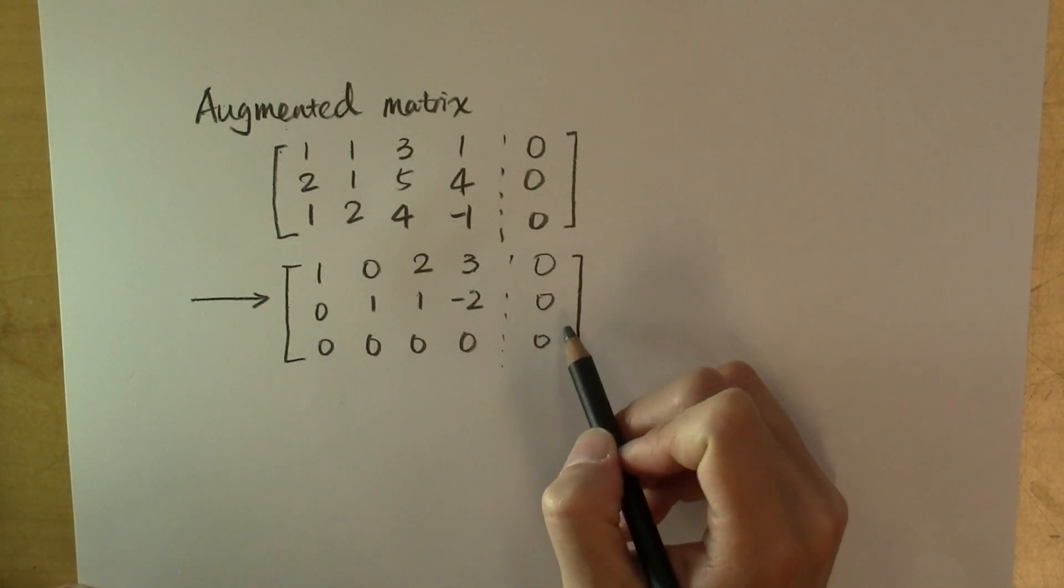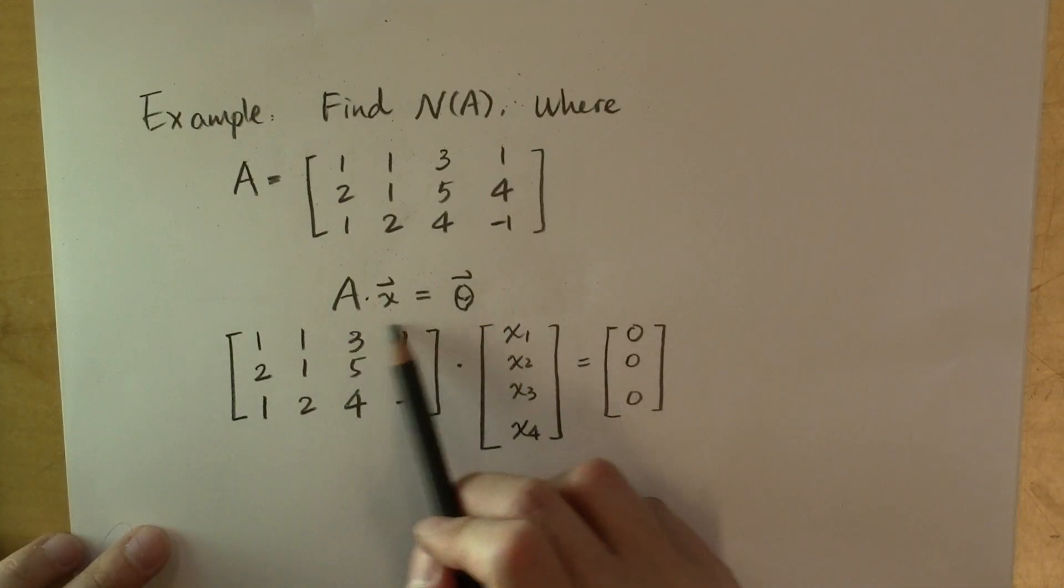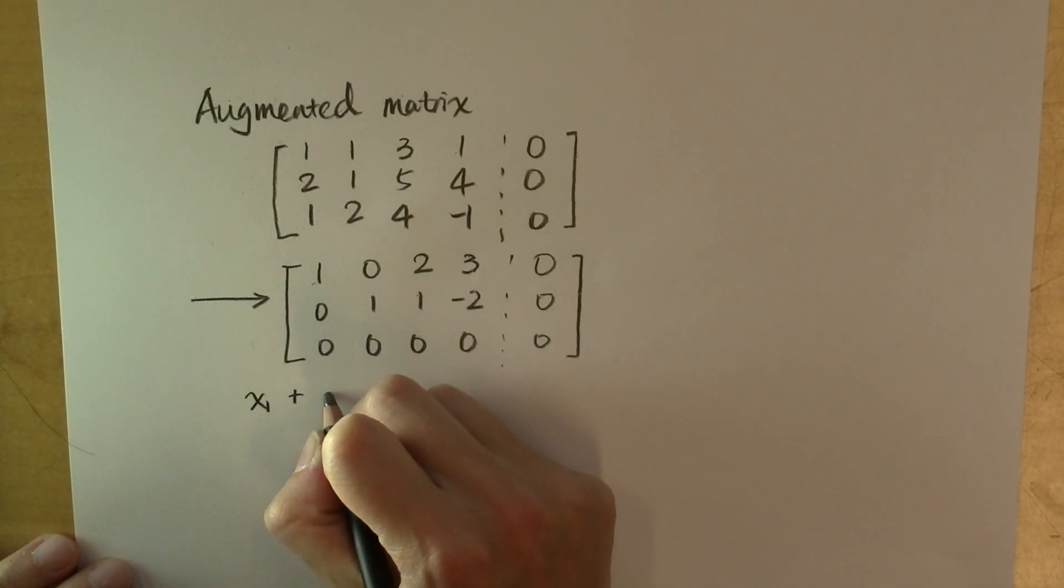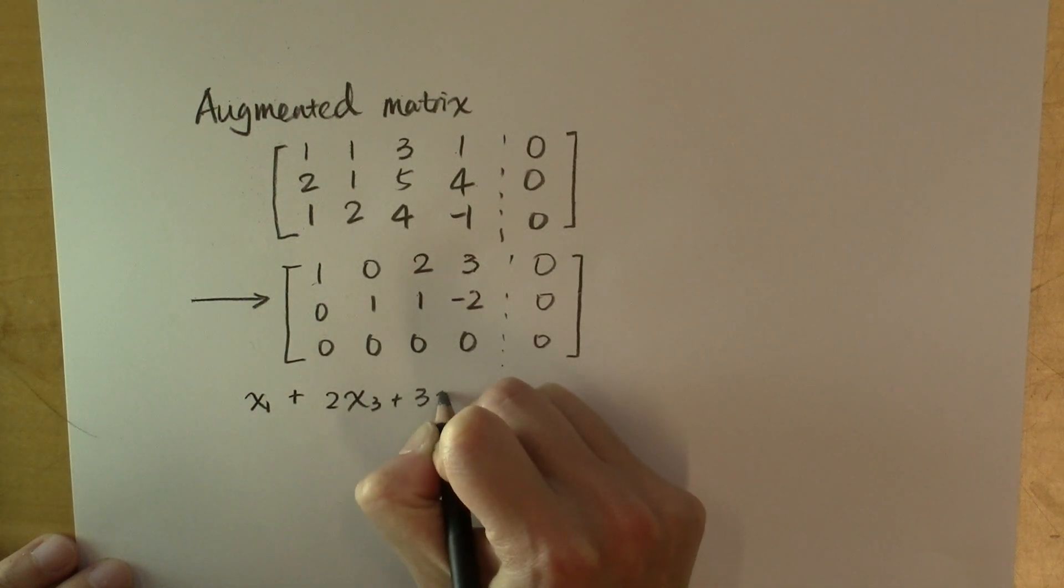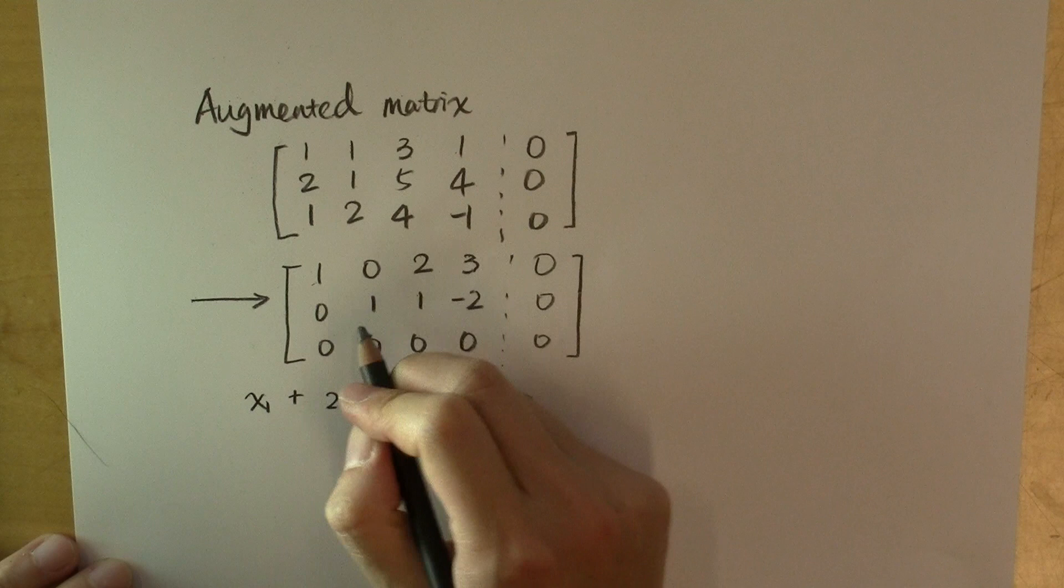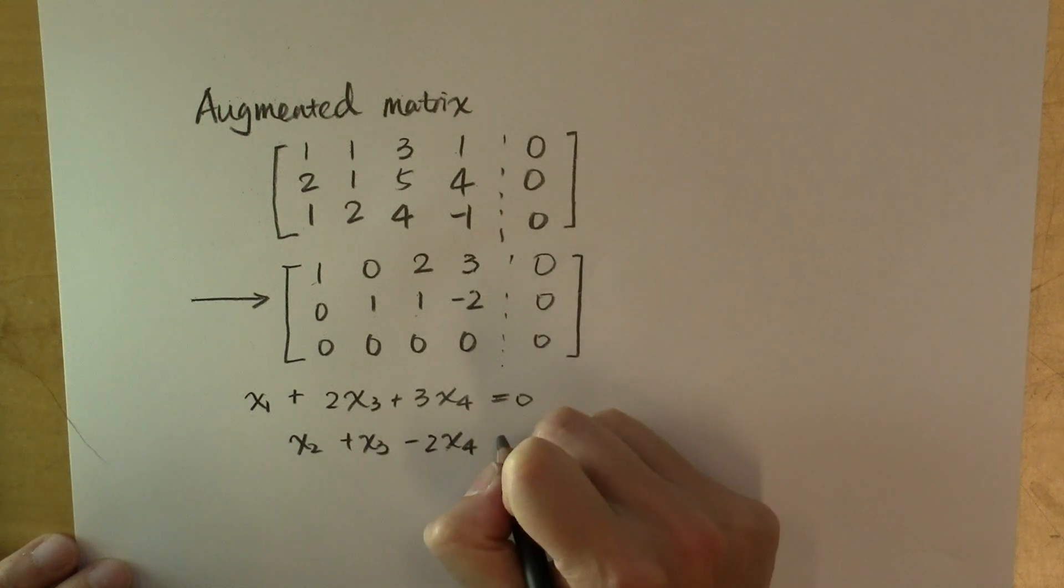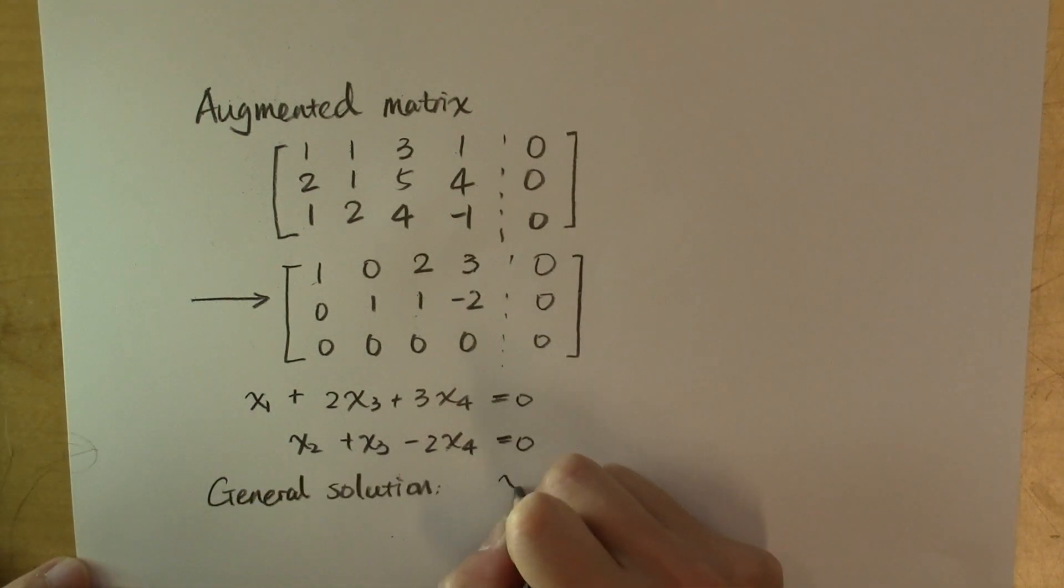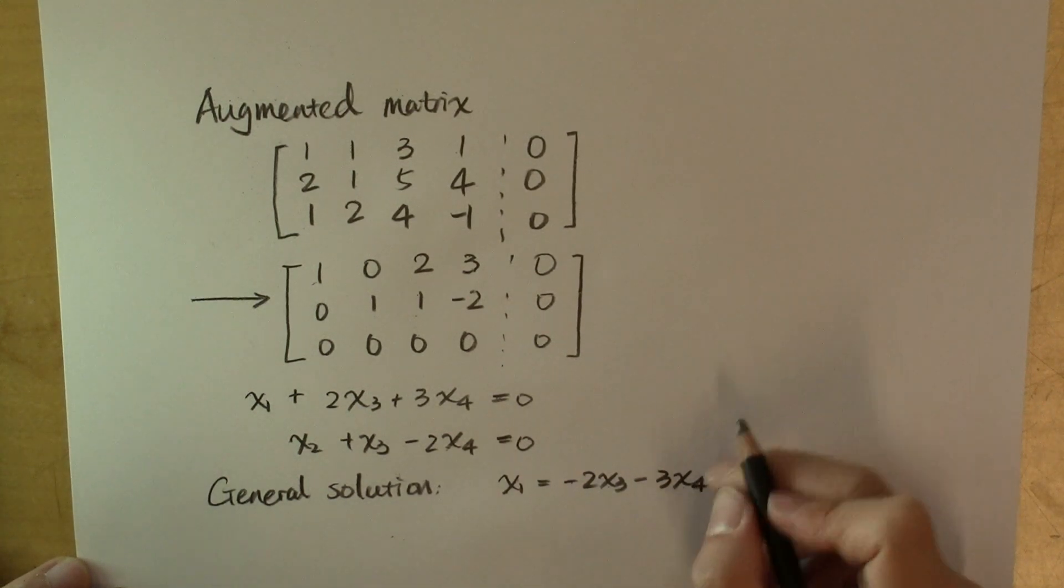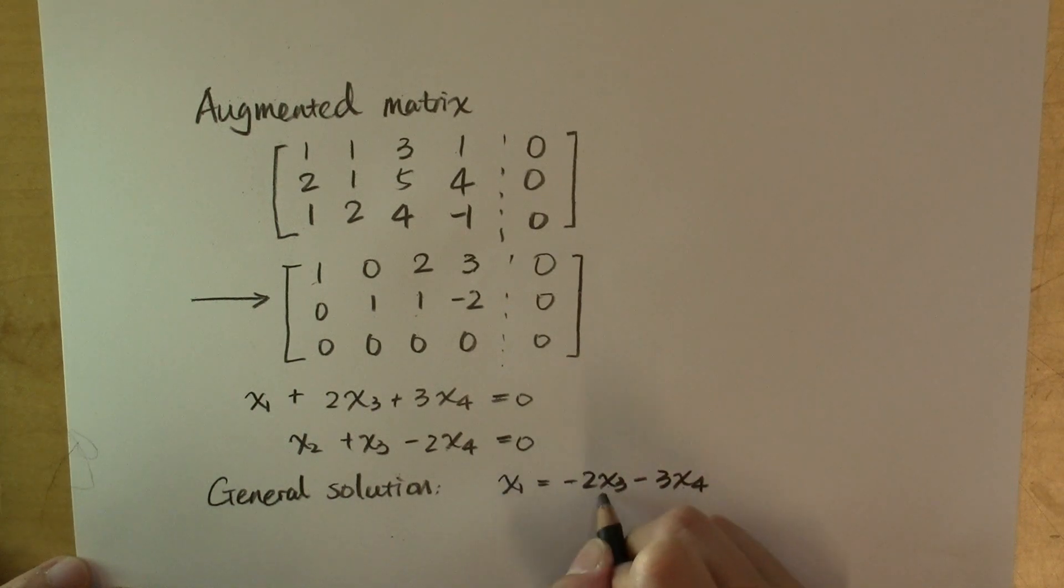From this augmented matrix, we can tell that the general solution to this homogeneous system satisfies x sub 1 plus 2x sub 3 plus 3x sub 4 equal to 0. So the general solution is x sub 1 equal to -2x sub 3 - 3x sub 4, where x sub 1 is a dependent variable, x sub 3, x sub 4 are independent variables. And the other dependent variable, x sub 2, can be expressed from this equation as -x sub 3 + 2x sub 4.